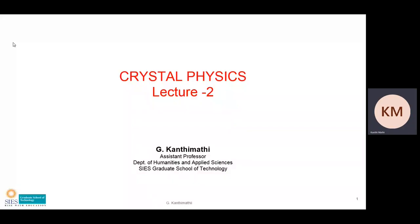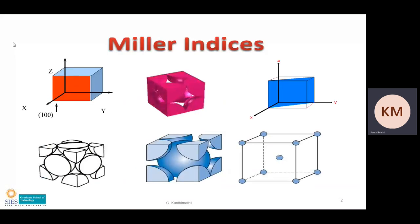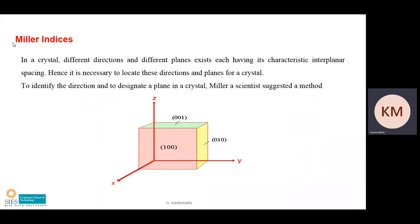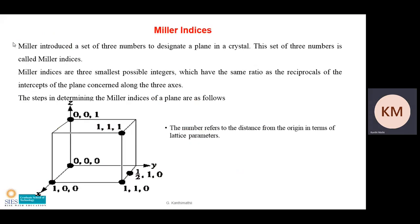Good morning everyone. We are going to see a part of crystal physics — that is Miller indices. We know very well that a crystal is highly dependent on planes and directions, or we can say that a crystal is a collection of a large number of planes and directions. So in order to identify a plane or designate a direction, Miller, a scientist, suggested a method.